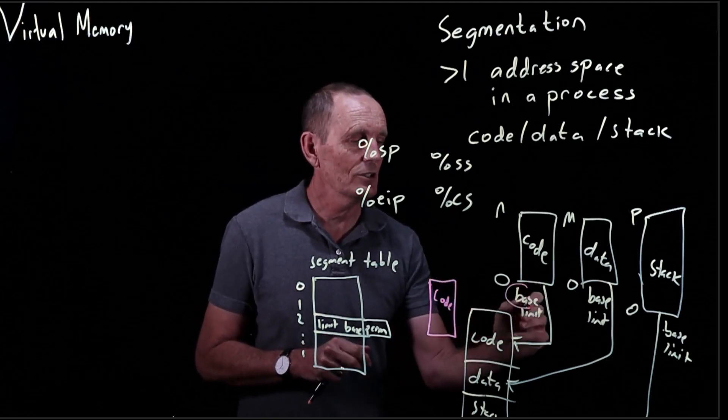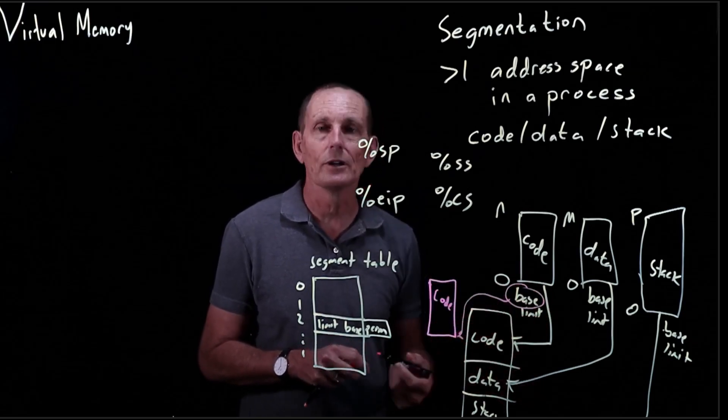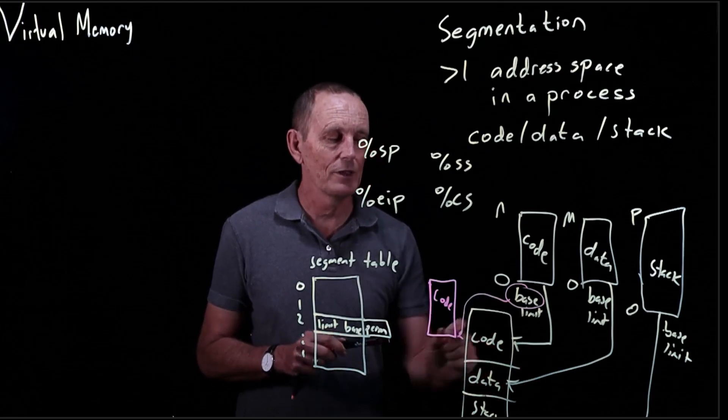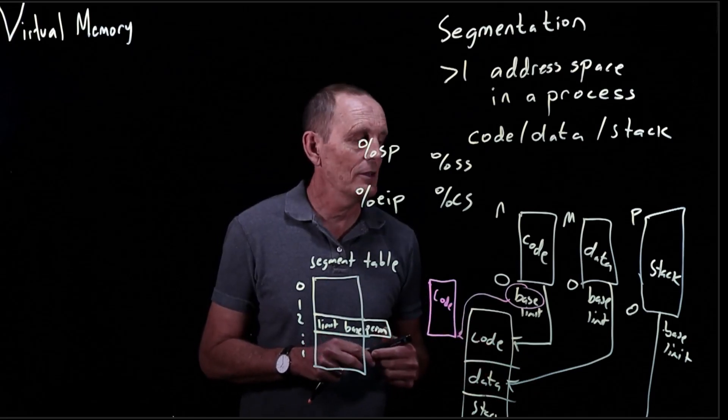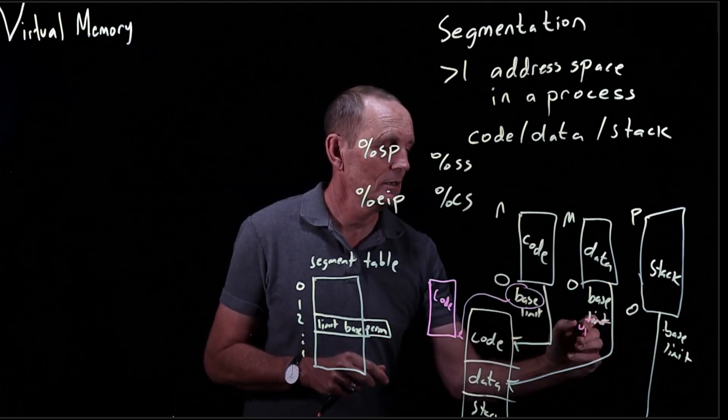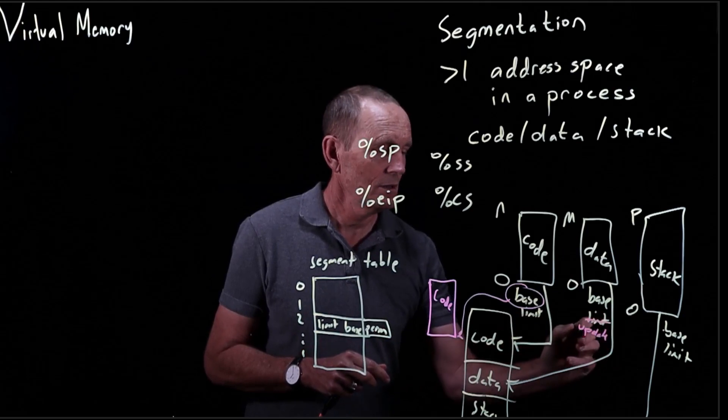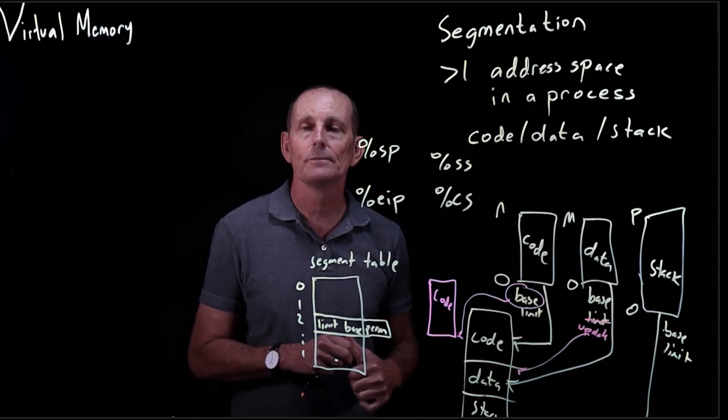That means we need to change the base register - the base register now points to here instead of where it used to. We freed up some space for the data segment, and now we need to just update the limit to show that the data is now larger.